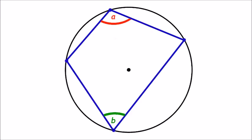We then label two opposite angles, I chose a and b, and we want to prove that a plus b equals 180 degrees, and we can do this by using another circle theorem.